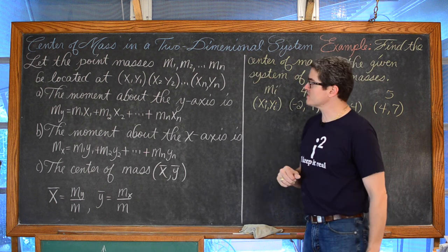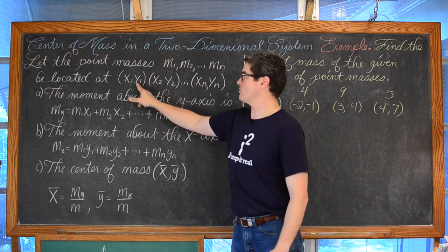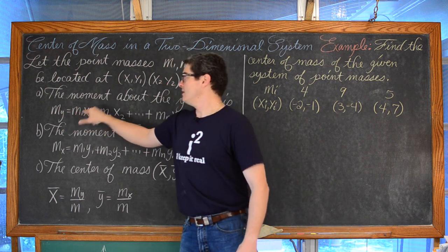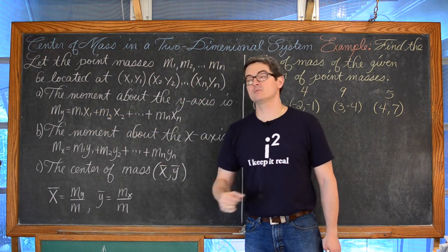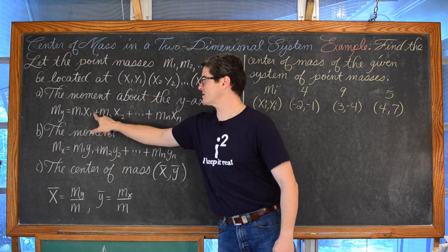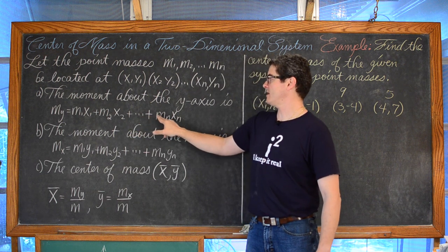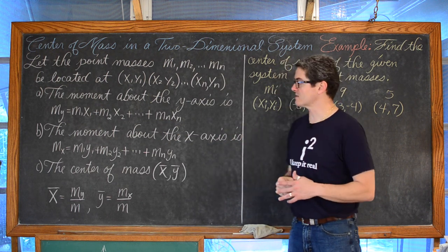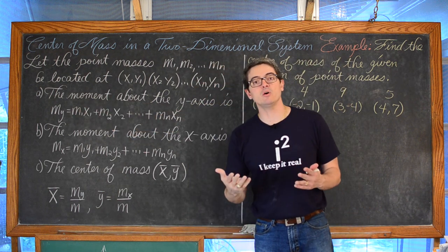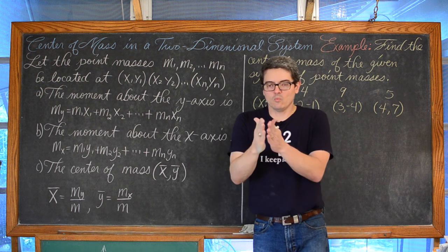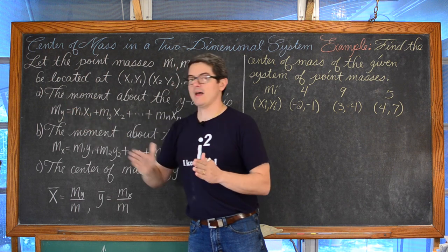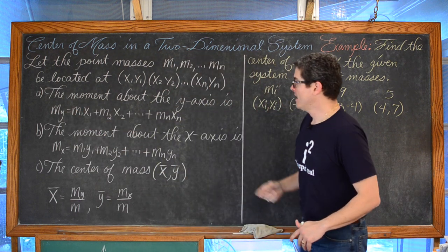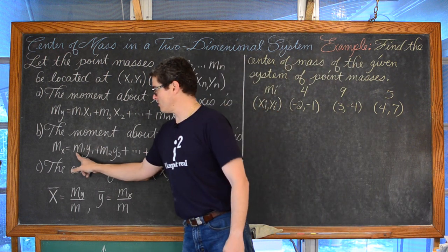Let the point masses m sub 1, m sub 2, all the way up to m sub n be located at the points x sub 1 y sub 1, x sub 2 y sub 2, and up to x sub n y sub n. The moment about the y-axis m sub y is equal to m sub 1 times x sub 1 plus m sub 2 times x sub 2, and so on, up to m sub n times x sub n. This looks very similar to finding m sub 0 — the moment about the origin — because the y-axis is at x equals 0, so x describes how far you are away from the y-axis.